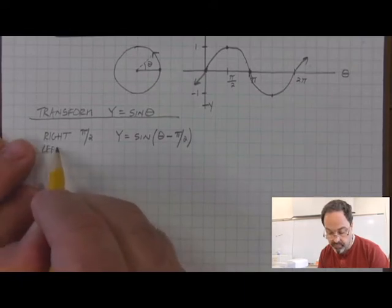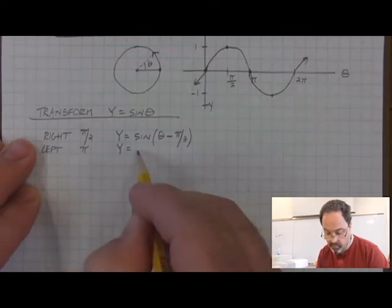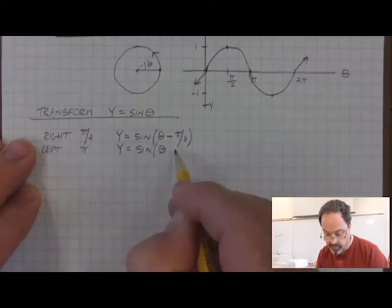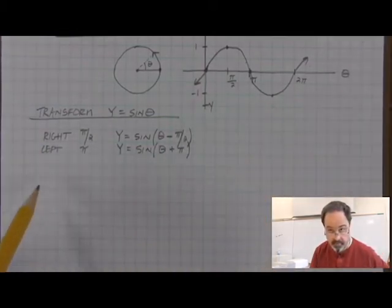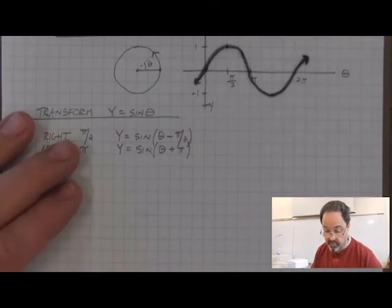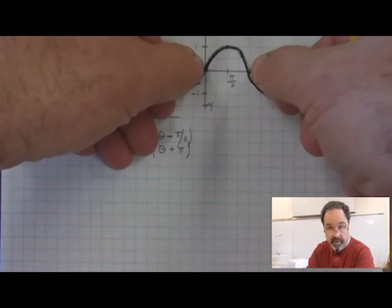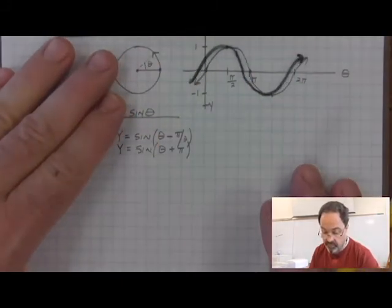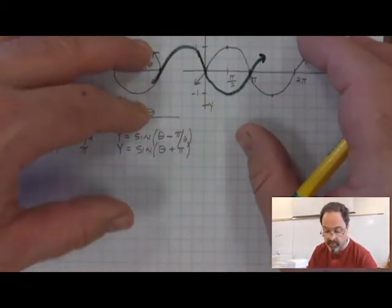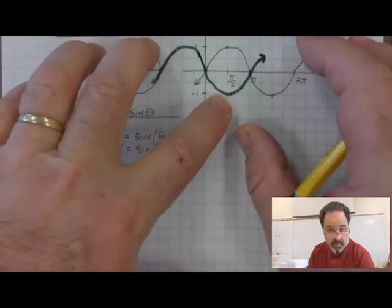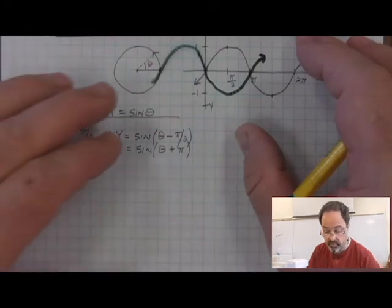We can also go left. If we wanted to go left by pi, we would affect the horizontal variable theta — and to go left, we add. Going left by pi looks like this: a pi distance horizontally, and if we move left pi, we shift the entire sinusoidal wave over. It still has a maximum and a minimum of 1 and negative 1, but where they are located horizontally has been changed.